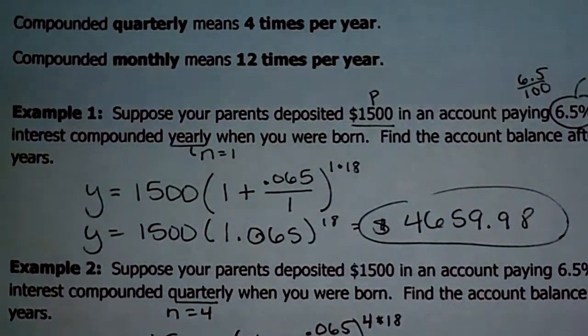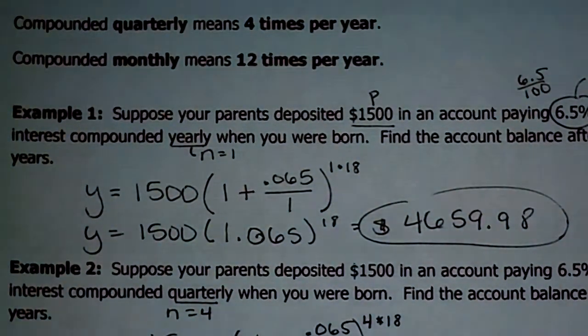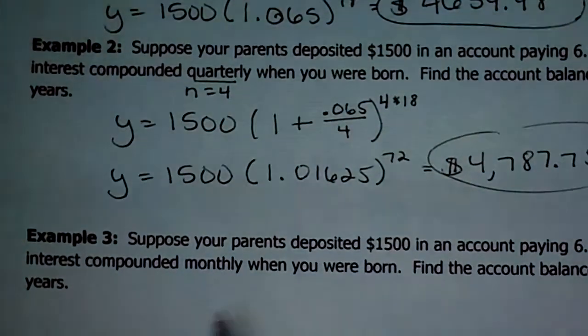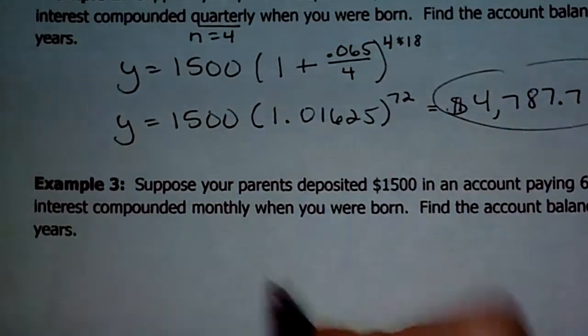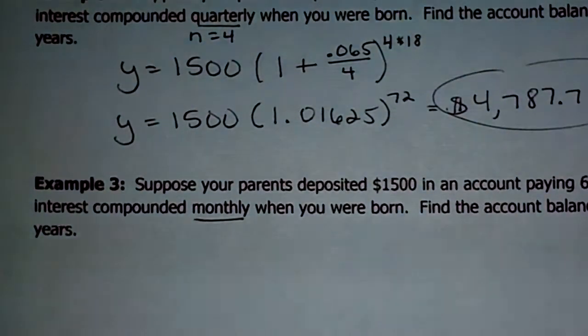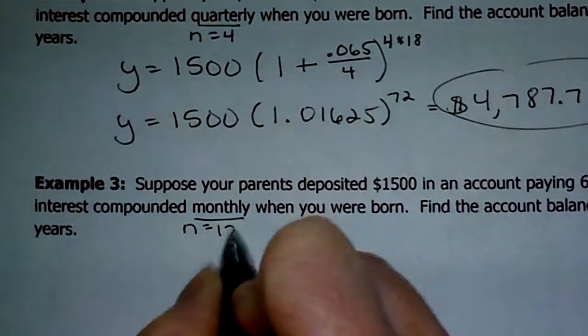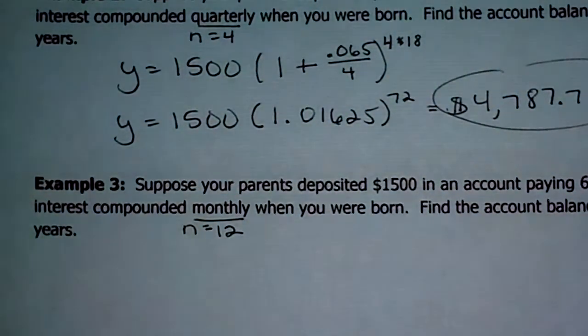So what do you think? Does it make a difference? Yes. And I'm guessing you're seeing that the more they compound it, the better off you are, right? So look for that. How often do you compound your interest? Ask that question. All right, last one. This time, same scenario, but it's going to be compounded monthly. That means that n is going to be equal to 12. It happens 12 times a year.